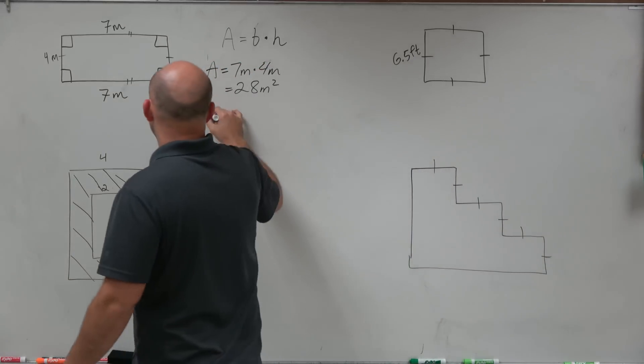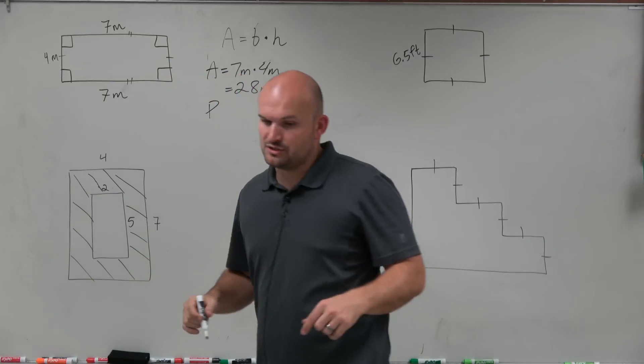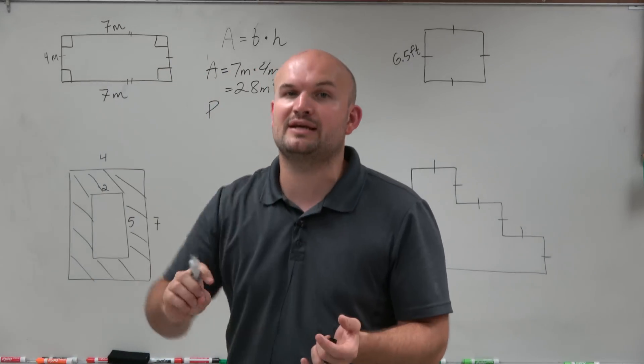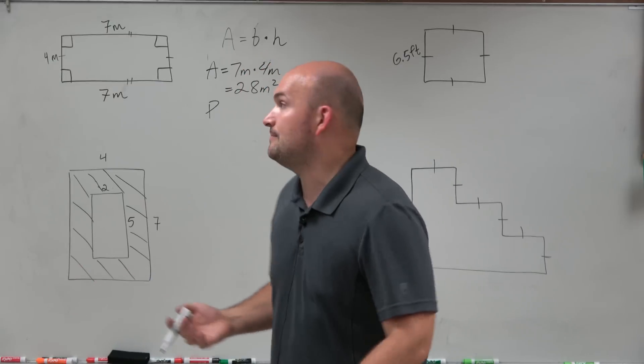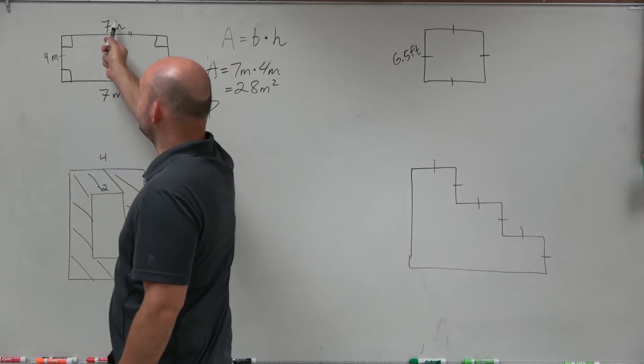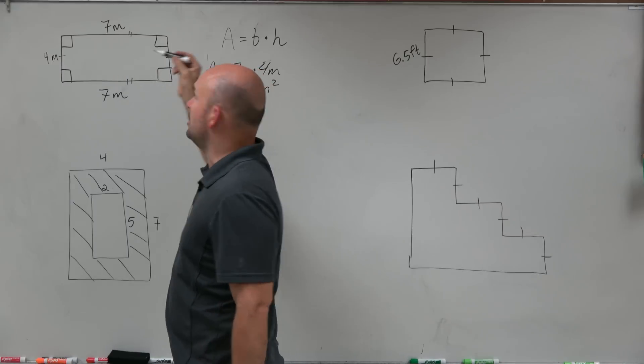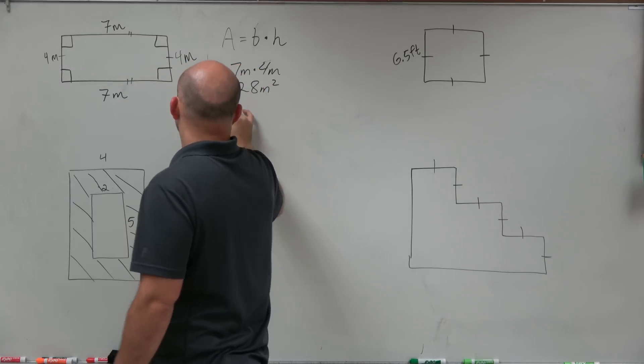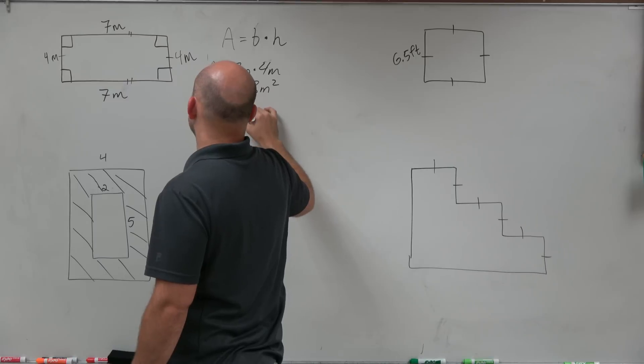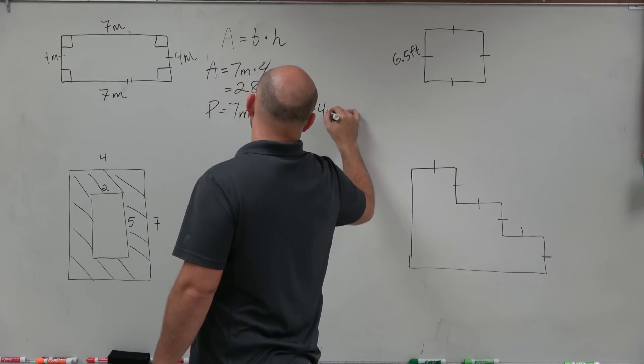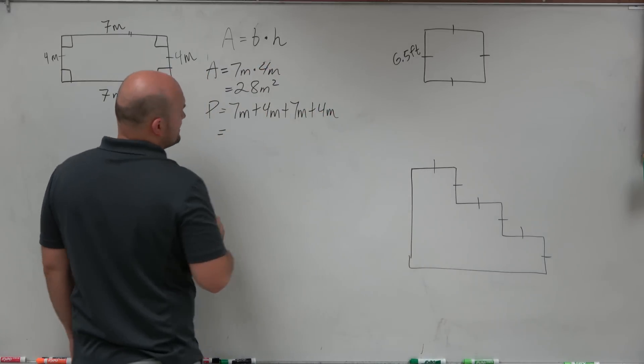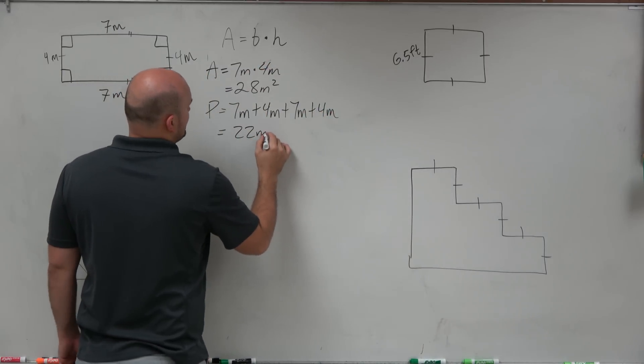Now to find the perimeter, that's going to be basically the distance around the figure. So if we're going to take a string and wrap it around that rectangle, how long would that string need to be? So we have 7 meters, 4 meters, 7 meters, and we know that this also has to be 4 meters. Therefore we do 7 meters plus 4 meters plus 7 meters plus 4 meters, and that's going to be 22 meters.